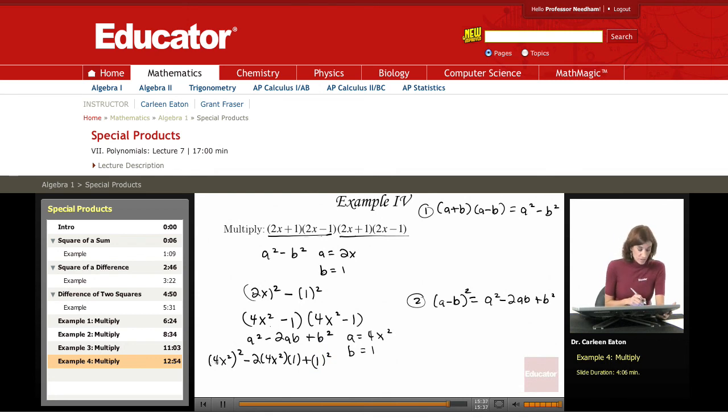Simplifying this. 4 squared is 16. x squared to the second power, it's 2 times 2, that's x to the fourth. Negative 2 times 8 is 8 times 1, it's just negative 8 x squared. 1 squared is 1.